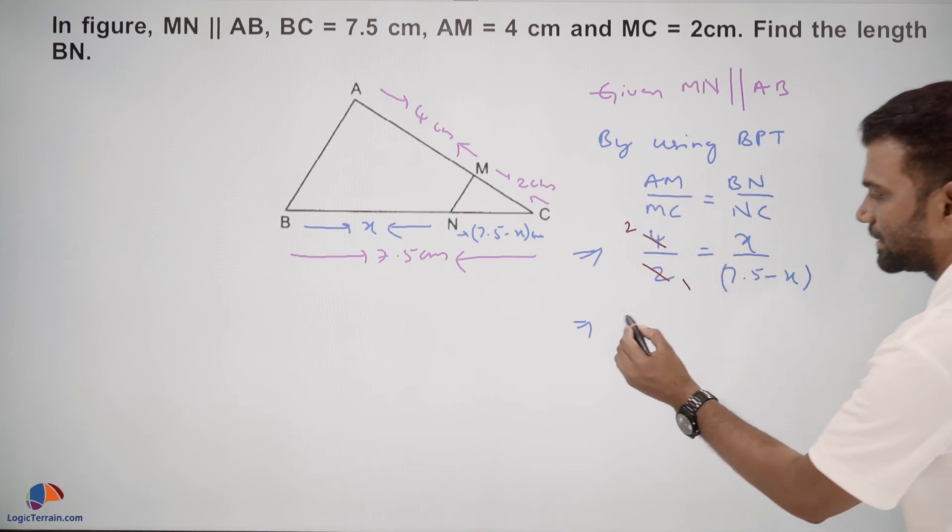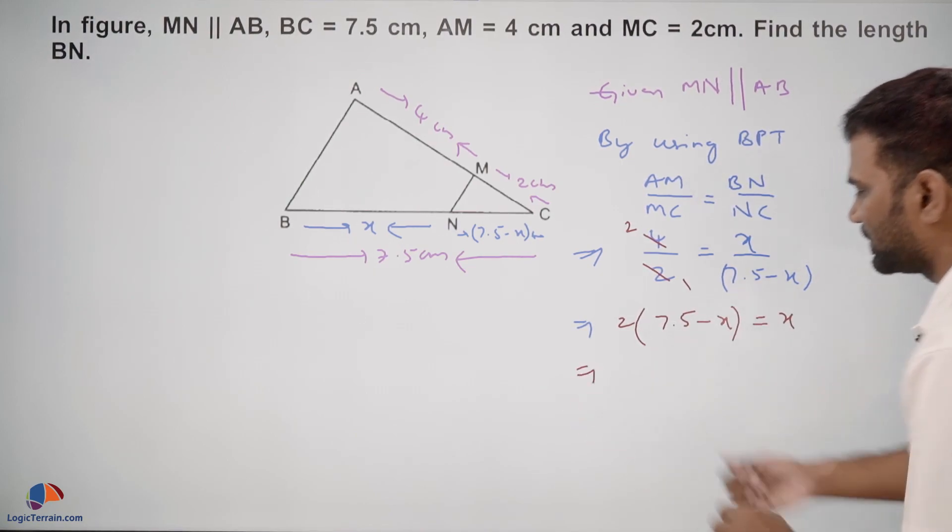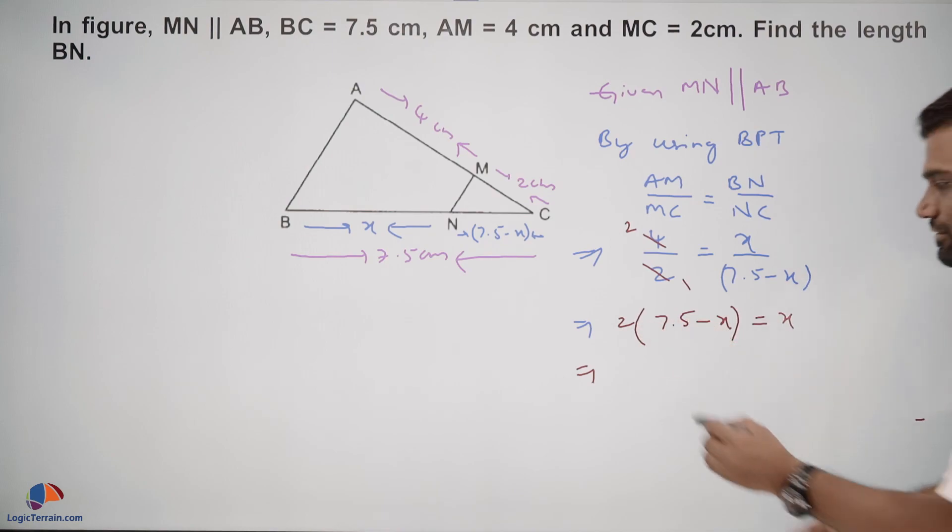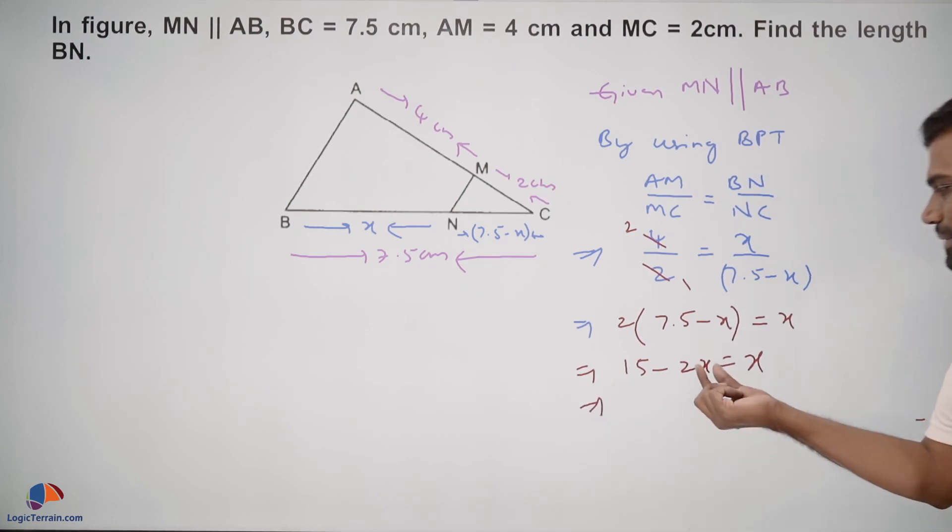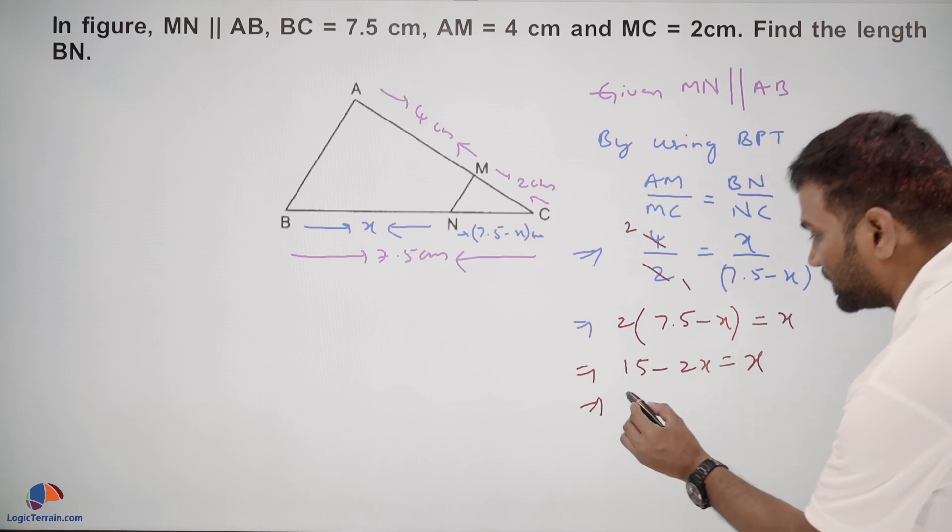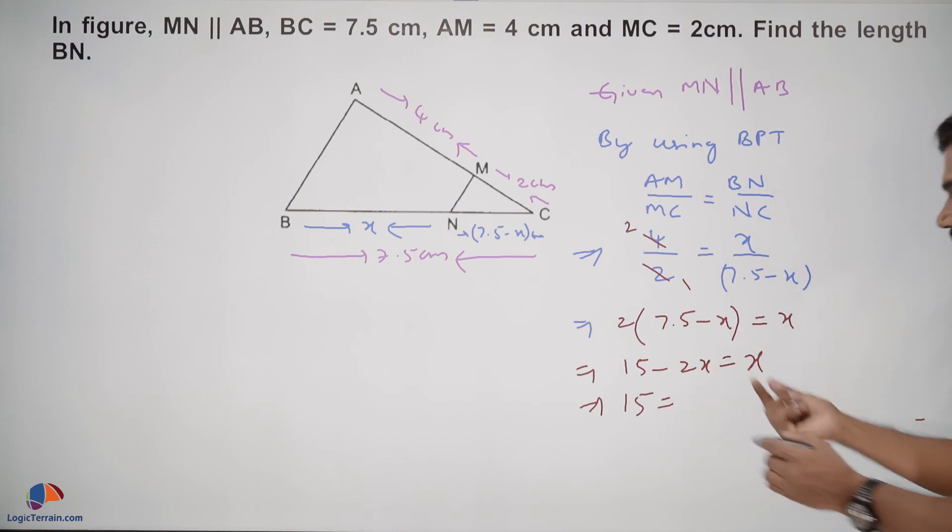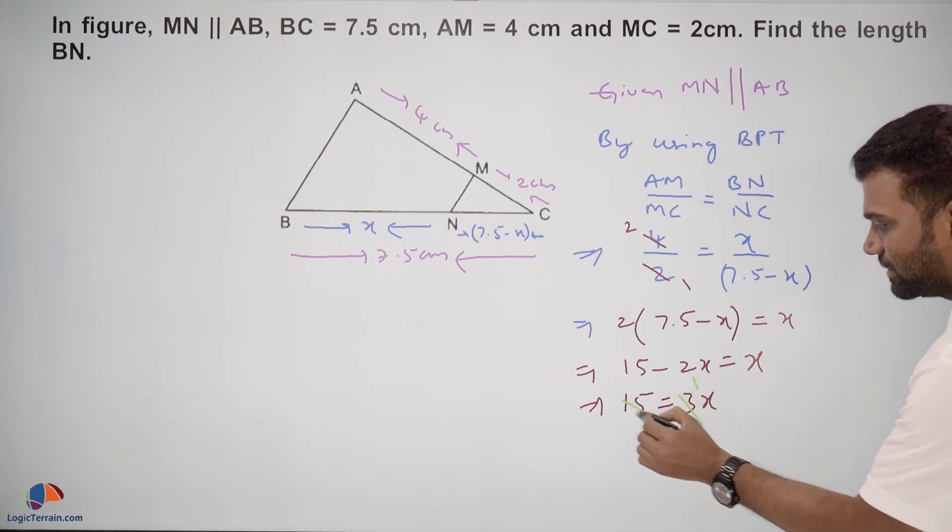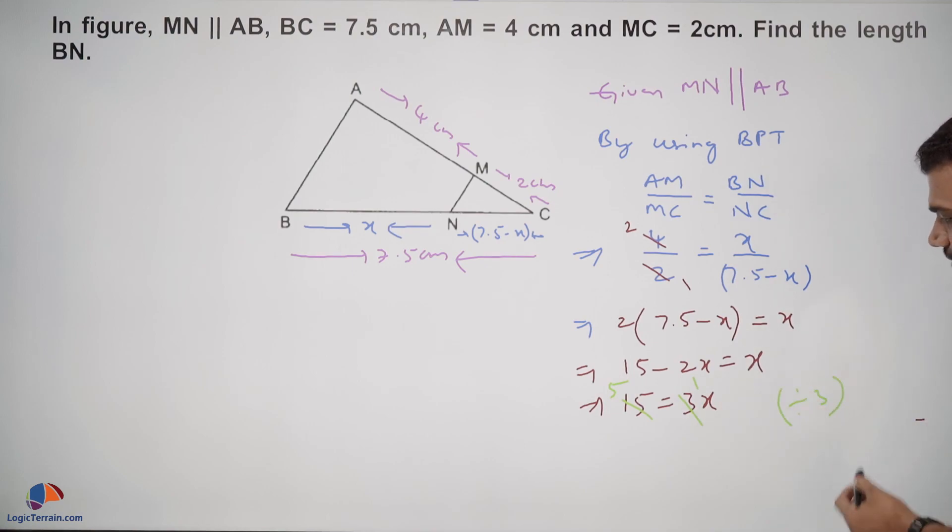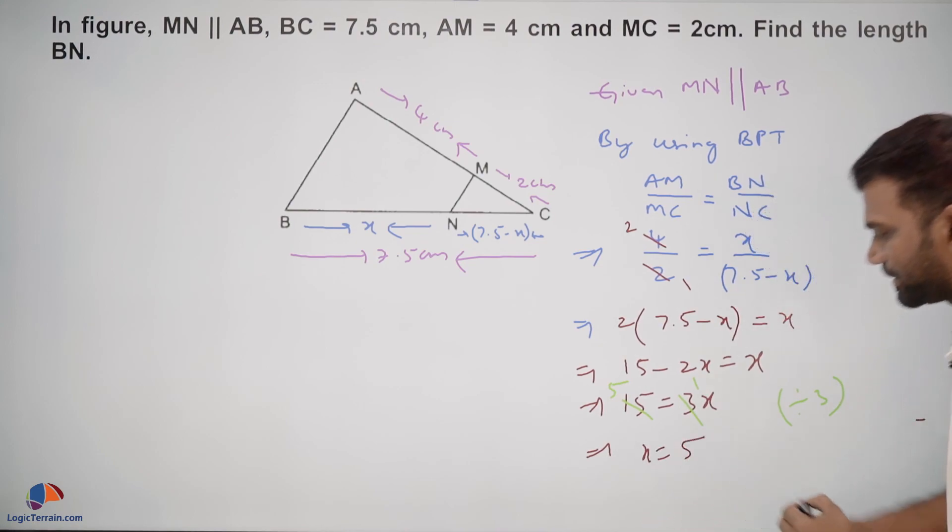Cross-multiplying, 2 times 7.5 minus X equals X, giving 15 minus 2X equals X. Dividing both sides by 3, we have X equals 5.